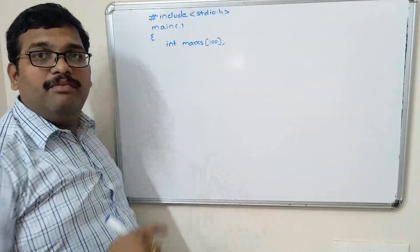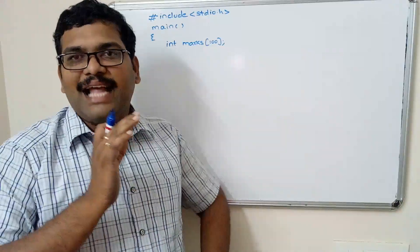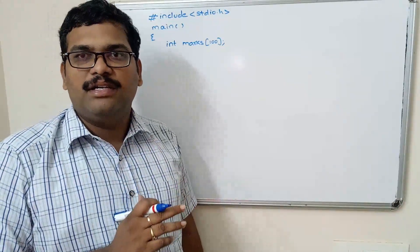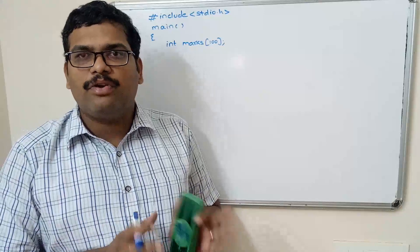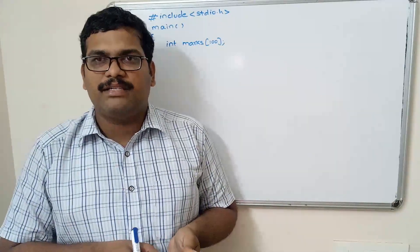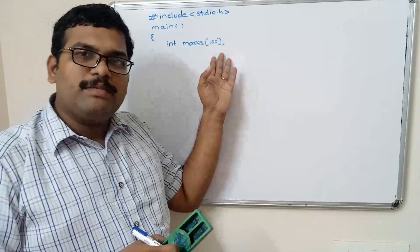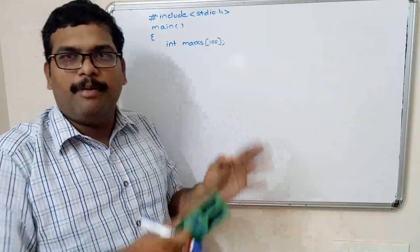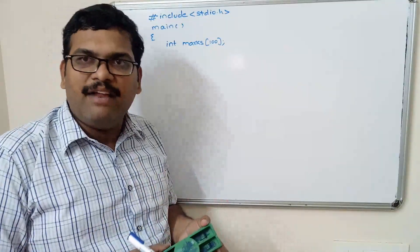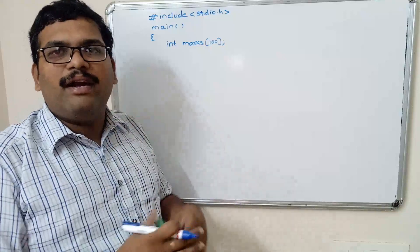That doesn't mean we have to use all 100 elements. This array can store a maximum of 100 elements, so we can store only 5, 10, or 6 elements. It's better to declare with a maximum number of elements, and later in the program we can use a scanf function to read the required number of elements.